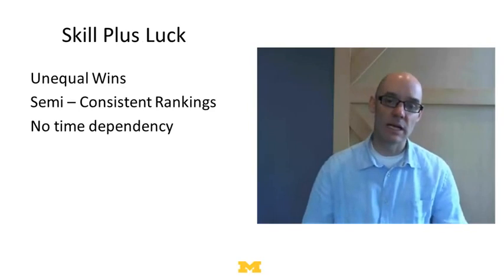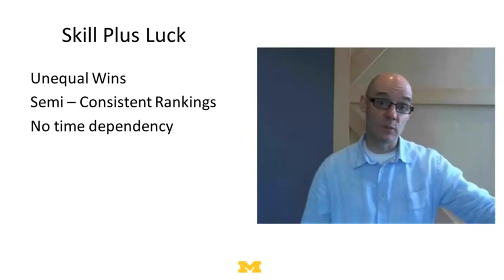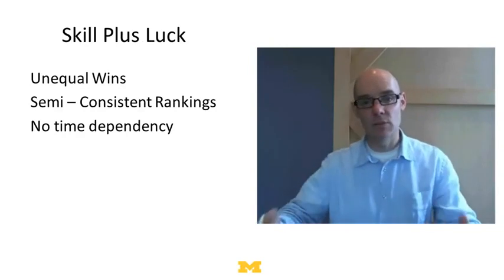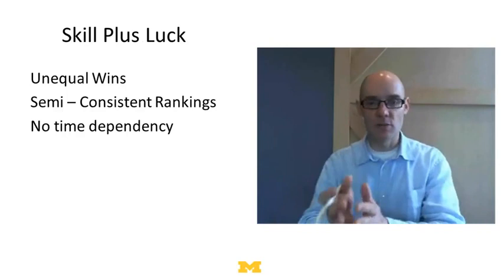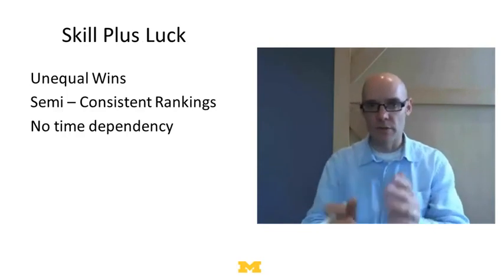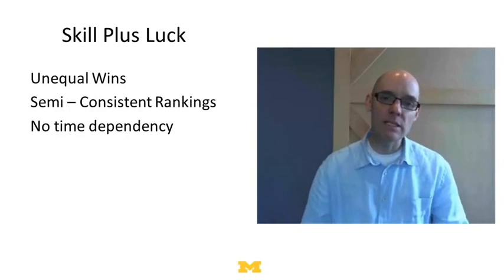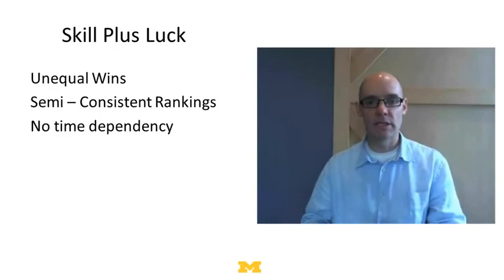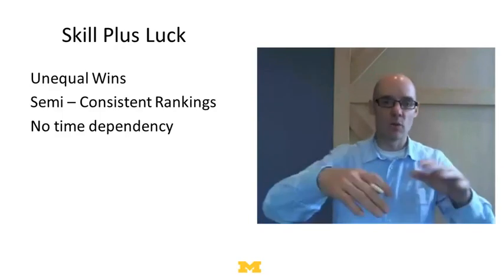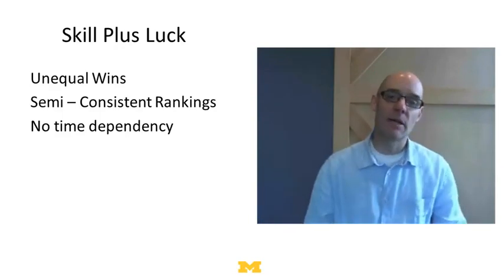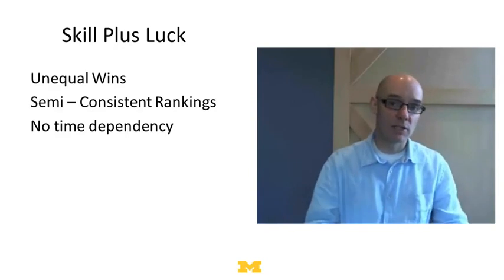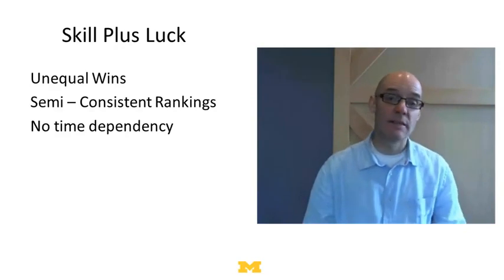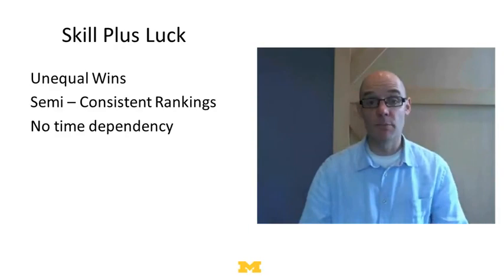Contrasting with the skill plus luck model, we'd expect to see unequal wins and some consistent winners — semi-consistent rankings where higher ability people do better, keeping in mind the paradox of skill. Two people close in ability will move back and forth, but we'd expect semi-consistency. There wouldn't be a huge amount of time dependency, since how you did last period wouldn't strongly influence this period given your known skill level. Industry market shares or some sports competition may fit this model.